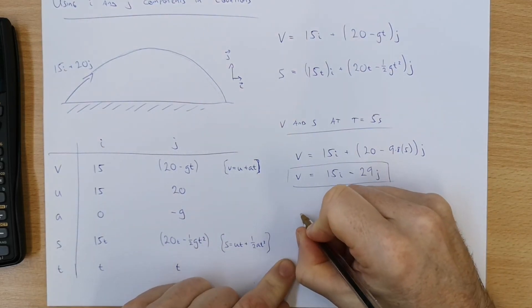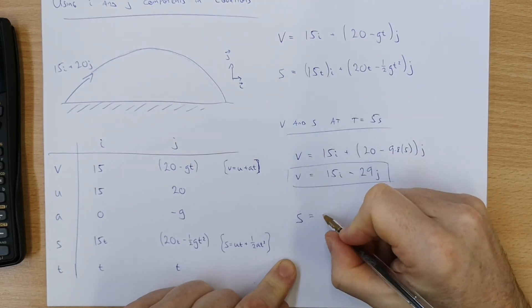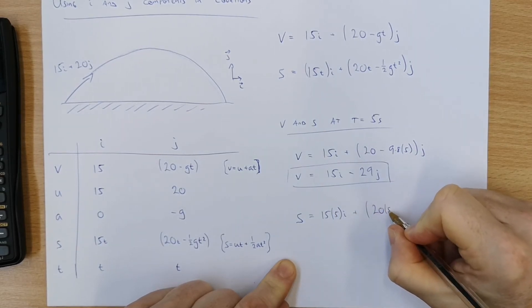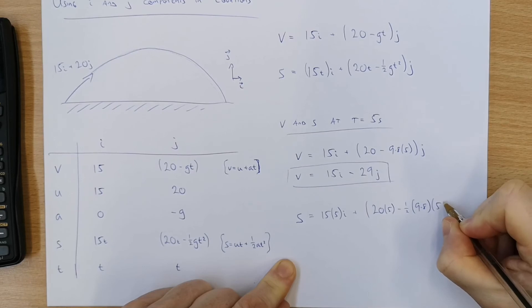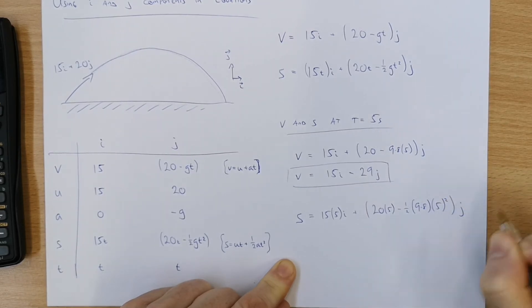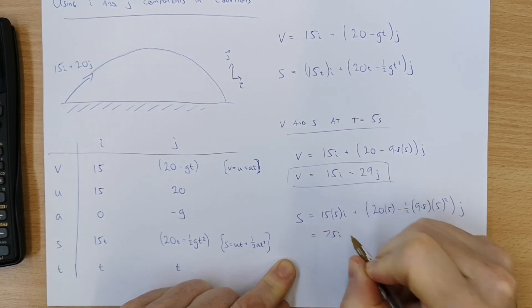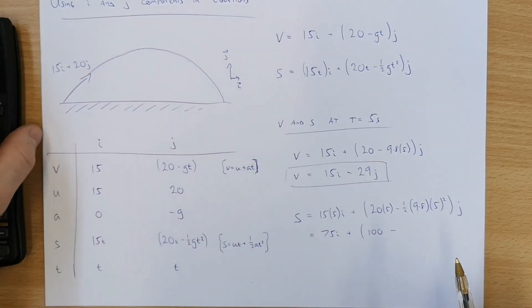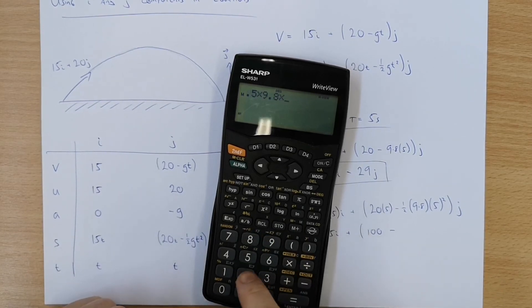Do the same for the distance displacement. Displacement is 15 by 5 in the i direction plus 20 by 5 minus 0.5 by 9.8 by 5 squared in the j direction. This is ripe for an error so I'm going to do this in two steps. So that is going to be 75i. That's fine. Plus 100 minus let's see what that one's going to be, 0.5 by 9.8 by 5 squared.